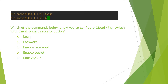The question reads: which of the commands below allows you to configure a Cisco switch with the strongest security option? As you can see, you are in user mode and you type `enable`, which brings you right into privilege mode without asking for any password. In order to configure the switch to ask for a password when moving from user mode to privilege mode, you have to go to global configuration mode.